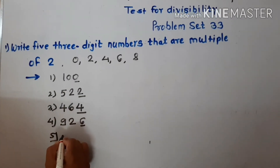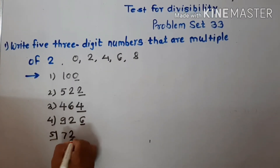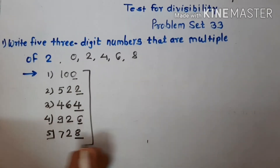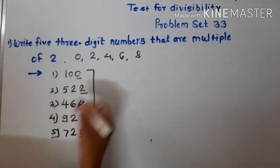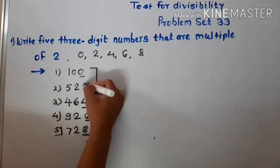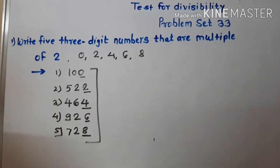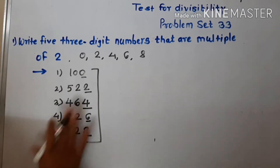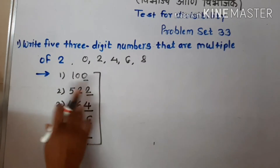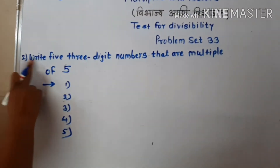The fourth number is 926 — unit place has 6. And the fifth number is 728 — unit place has 8. So as you notice, all these numbers have 0, 2, 4, 6, or 8 in the unit place, meaning they are exactly divisible by — they are multiples of 2.